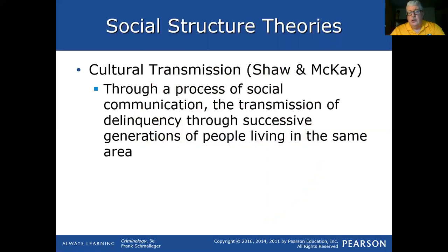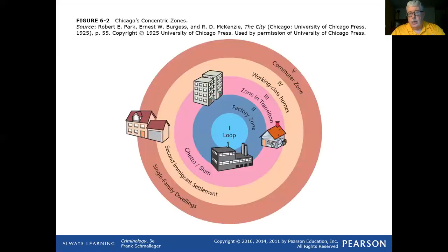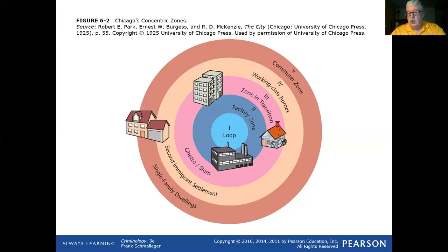Shaw and McKay talked about cultural transmission — a process of social communication involving the transmission of delinquency through successive generations of people living in the same area. Studies showed that no matter which group lived within the zone of transition, the level of crime tended to stay the same — relatively high. Whether it was the Irish, Italians, Hispanics, Blacks, or Asians moving in and out of the area, the level of crime stayed the same. Their theory — consistent with ecological theory or the theory of place — was that it was not the people, not ethnicity or race, but the location itself.